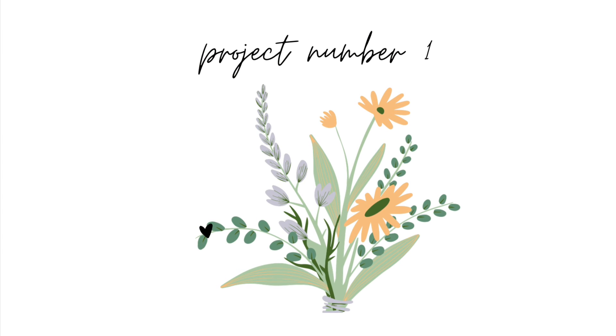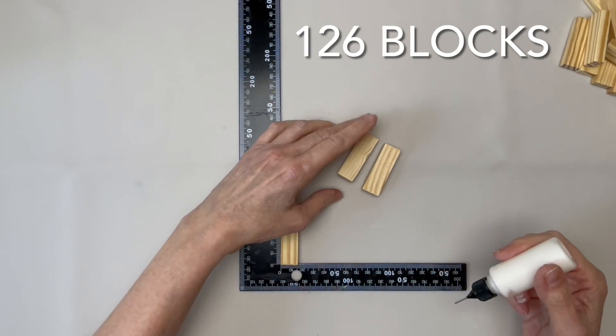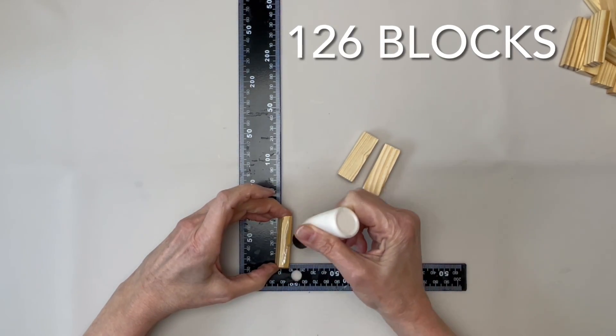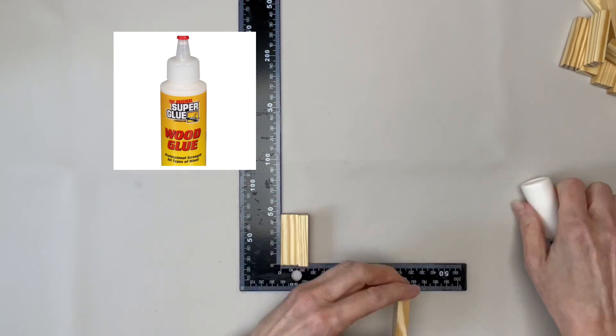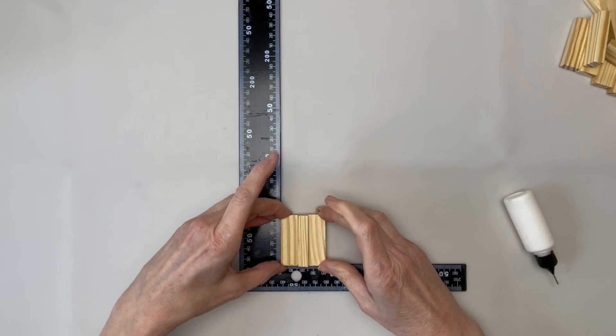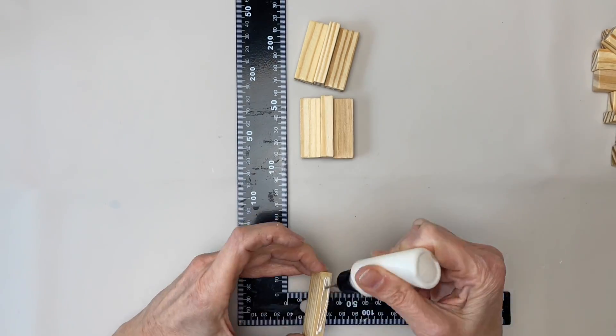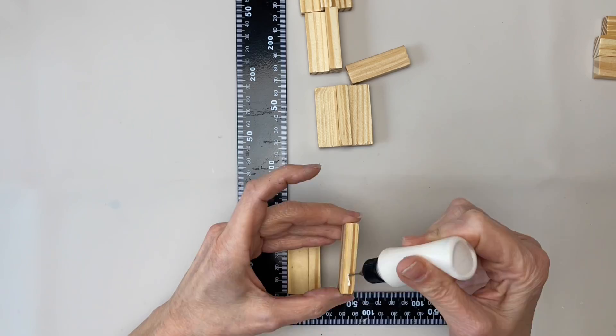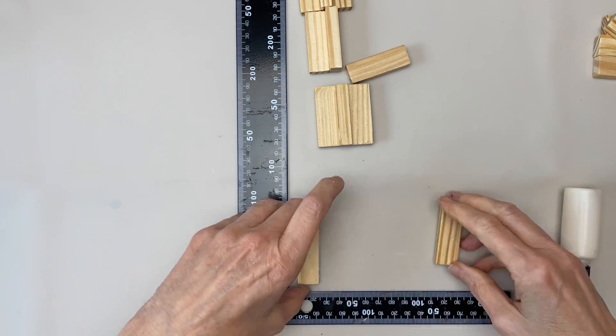The first project is a lantern. We'll begin by gluing three black pieces together, as you see here in the video, wide side to skinny side to wide side. You'll make a total of 42 of these. You'll need both hot glue and wood glue for this project.